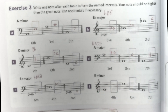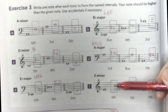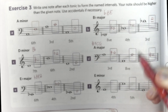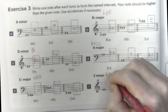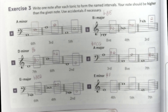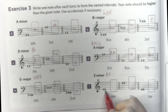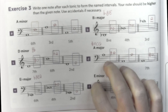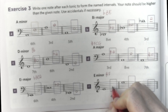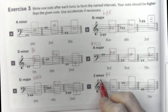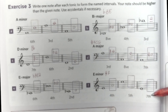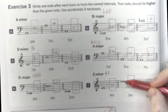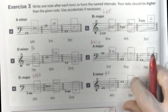E minor is the relative minor of G major, three semitones above. G major has one sharp and this sharp is Fa, because Fa is the first sharp in any key signature. A fourth from Mi: Mi, Fa, Sol, La. We need to remember that E minor is a minor key so D, the seventh degree, will be sharp.